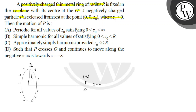Since both charges are opposite, the ring attracts the particle. The particle moves along the axis toward the ring, but due to inertia it passes through the ring, then the ring attracts it back from the other side. So particle P undergoes periodic motion — option A is correct.